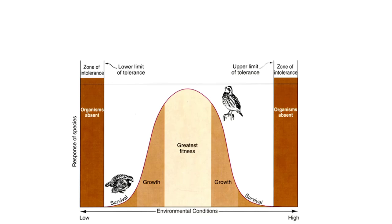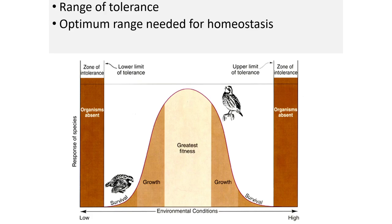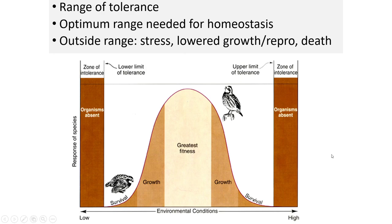If you remember back when we talked about ecosystems and the environment, we talked about the tolerance curve. When we look at the tolerance curve, we're looking at a range of tolerance. The optimum range needed for homeostasis is right in the middle — the greatest fitness. If you're outside of that range, you see stress, lowered growth and reproduction, or death.